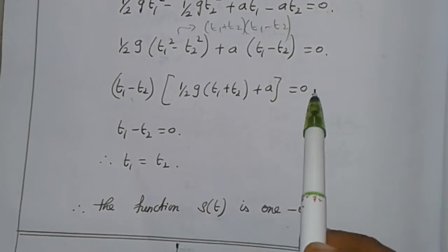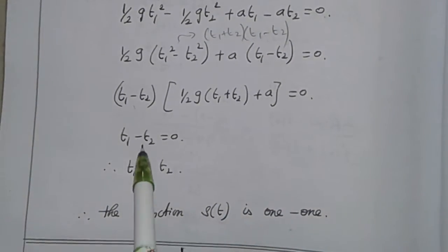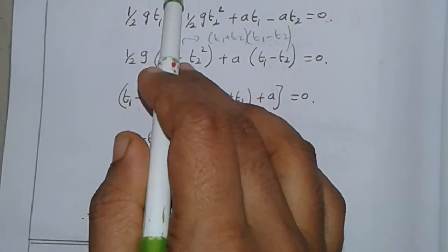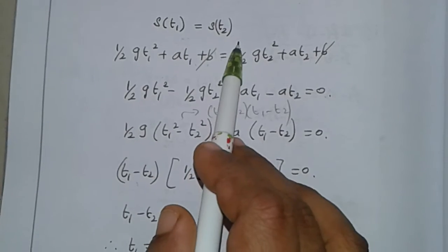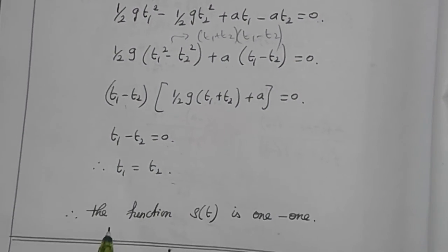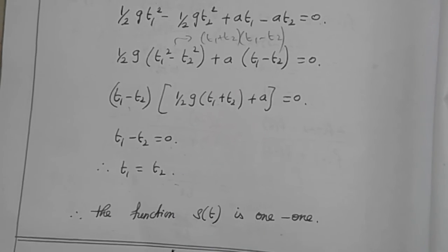For the product to equal zero, either the first part or second part equals zero. So t₁ - t₂ must equal zero, meaning t₁ = t₂. Since s(t₁) = s(t₂) implies t₁ = t₂, the function s(t) is one-to-one.